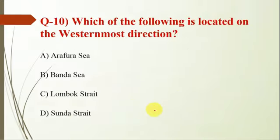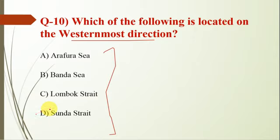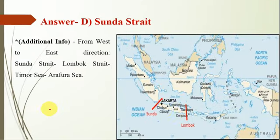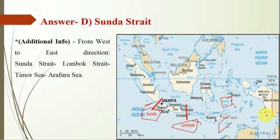Question number 10: which of the following is located in the westernmost direction? The correct answer is Sunda Strait. A map is given — the westernmost is Sunda Strait, then Lombok, then Banda Sea, and Timor Sea. The easternmost among the options given is the Arafura Sea. That's all for today's MCQs.